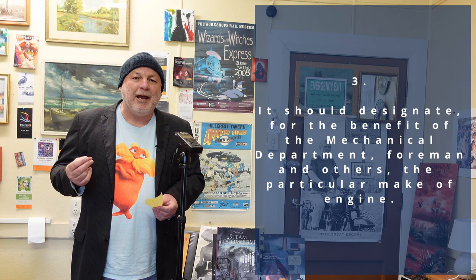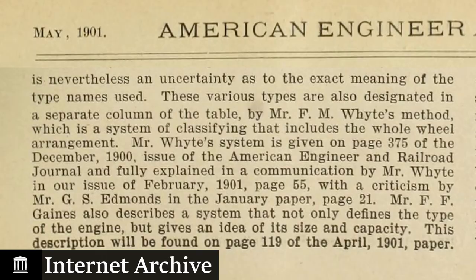Mr. Sanderson thought a general classification system needed to do three things: give a mental picture of the locomotive, give an indication of that locomotive's power, and tell each road's locomotive staff the particular make of the locomotive. The mental picture is pretty much what we've gotten with the White system, and Sanderson would have had to have been living in a cave not to be aware of it, as it had appeared and been discussed in locomotive trade journals. But Sanderson was of the view that a system based on wheel arrangement only didn't convey enough information.